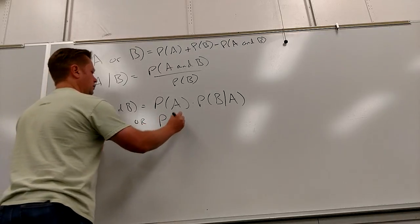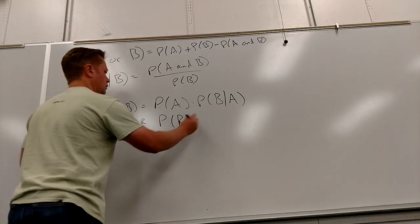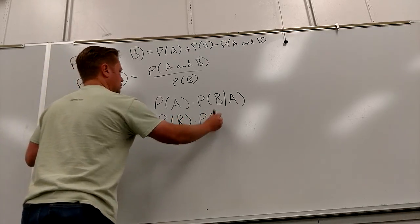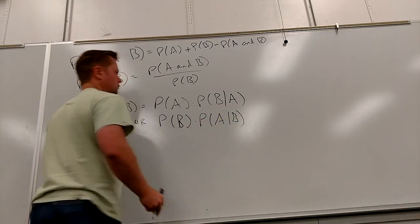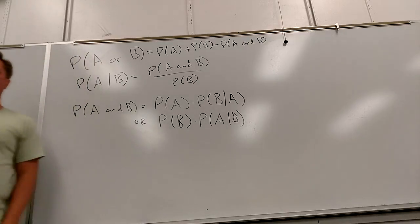Or, probability of B times probability of A given B — those will come out the same, believe it or not. It doesn't matter which way you do it.